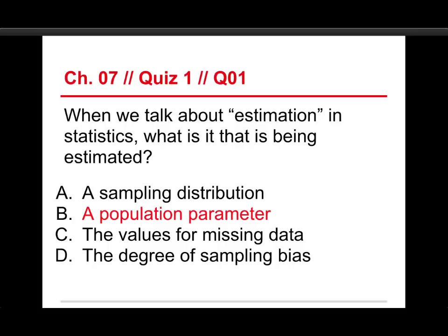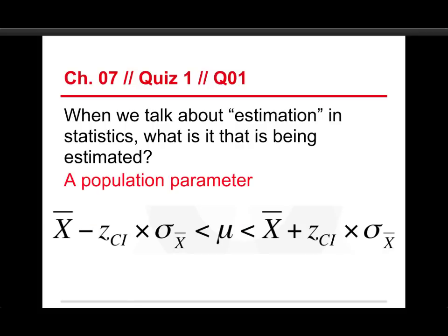In this particular case, when we talk about estimation, it's a population parameter. And you can see that when you look at the formula here. So this formula is trying to estimate the population mean. That's why we have that mu right there in the middle. And on the left side, this is the formula for confidence interval. On the left side, we have a sample mean minus a certain amount that's based on the standard error. And then on the right side, we have the sample mean plus a certain amount that's based on the standard error. And so that's why we're estimating. We're using the sample means to estimate the population mean.